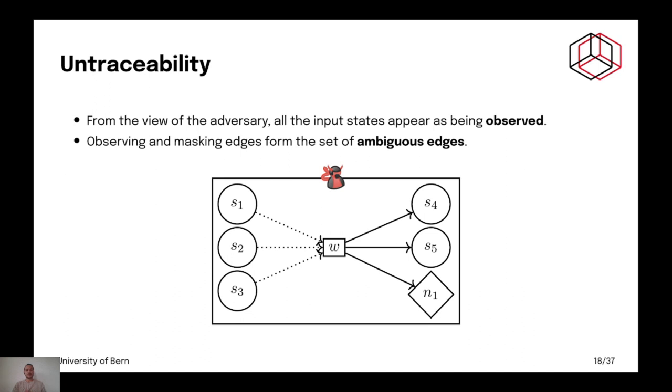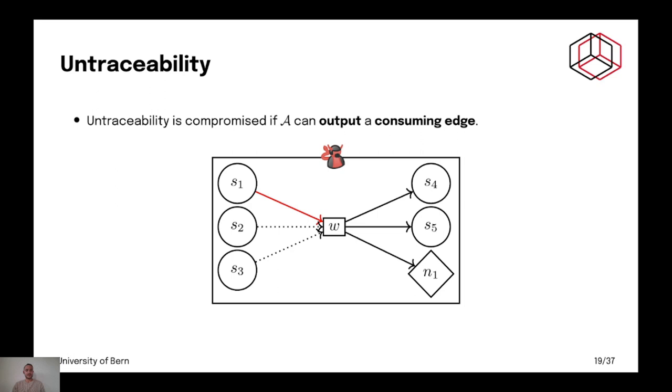Now, from the view of the adversary, like I said, all the input states, they appear as being observed. And we call observing and masking edges the set of ambiguous edges because they are ambiguous to the adversary or any non-involved parties. Now, untraceability is a compromise if A can output a consuming edge. In the case of our example, it's the masking edge from S1 to W.